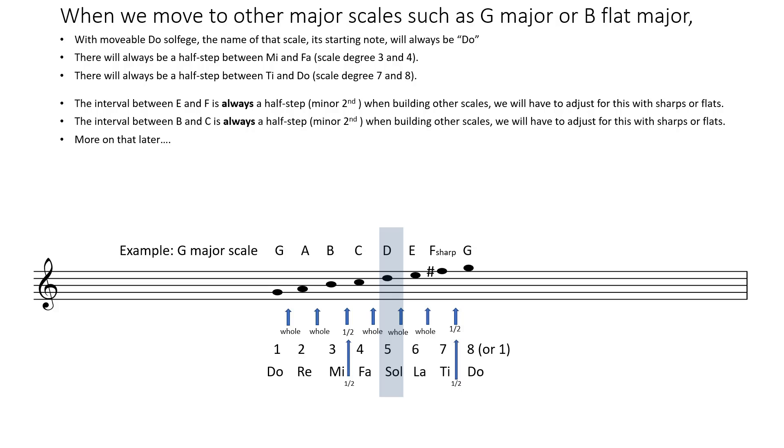D to E, 5 to 6 is a whole step. Now going from 6 to 7 we see we're using the notes E to F, a naturally occurring half step. Therefore we have to raise F by a half step to F sharp to make the distance from E to F a whole step.